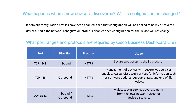For CBD Lite to work correctly, it needs to use certain ports and protocols. TCP port 4443 is used for inbound HTTPS secure web access to the dashboard. TCP port 443 is used for outbound HTTPS device management. UDP port 5353 is used for the MDNS protocol for device discovery on the local network.